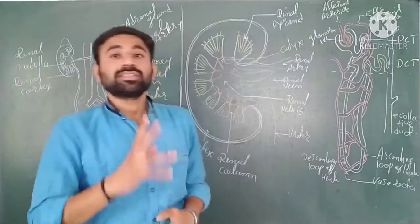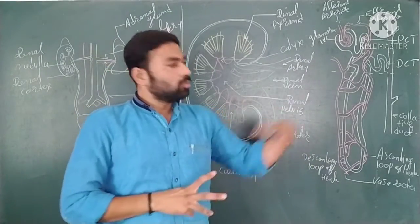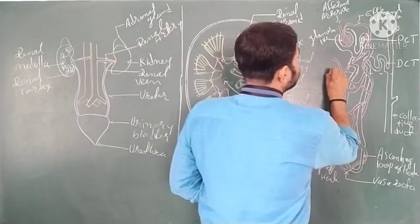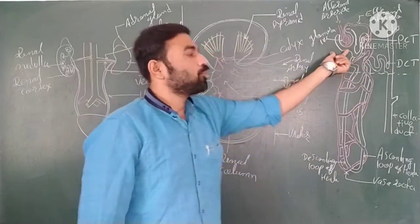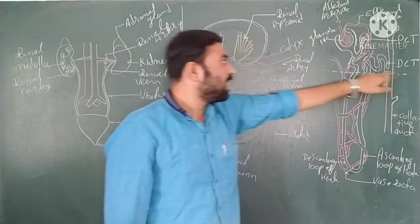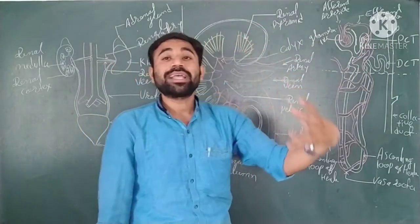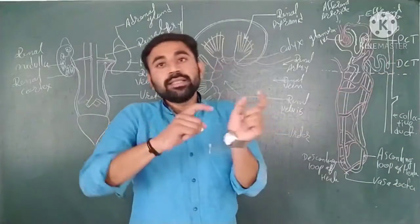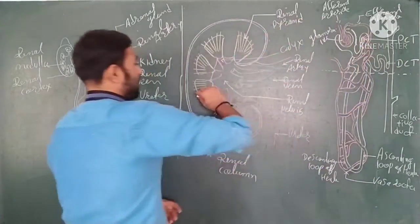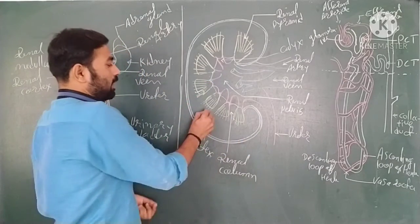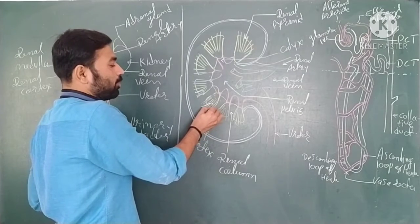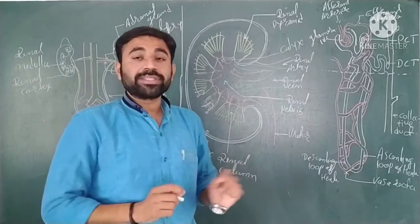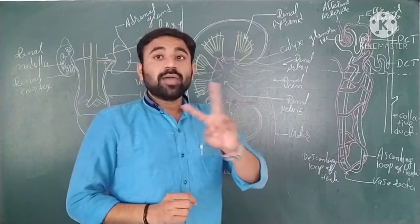Now regarding nephron types — there are two types. The demarcation is that the Bowman's capsule, PCT, and DCT are parts of the nephron present in the cortex region, while the loop of Henle is present in the medullary region. So the nephron components are arranged with the cortical parts above and the loop dipping into the medulla.